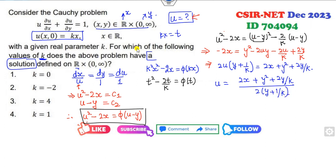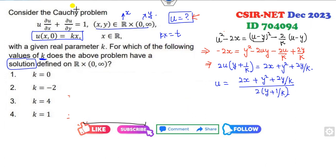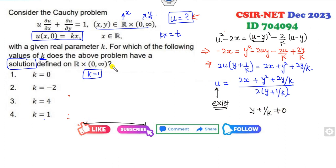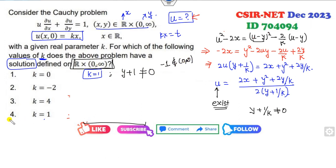So the solution is u = [2x + y² + 2y/K] / [2(y + 1/K)]. Now for the solution to exist, the denominator must be non-zero over this domain y ∈ (0, ∞). When K = 1, the denominator is y + 1, which is never 0 for y > 0, so K = 1 gives an existing solution. When K = 4, the denominator is y + 1/4, which is 0 only at y = −1/4, not in (0, ∞), so the solution exists.